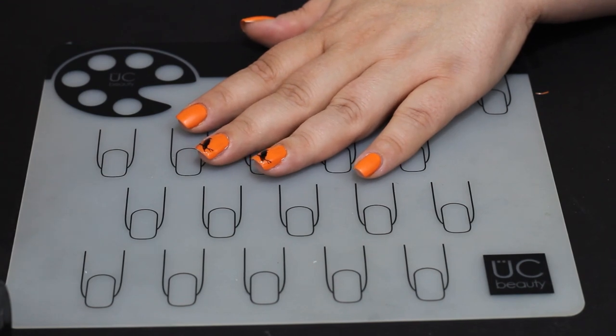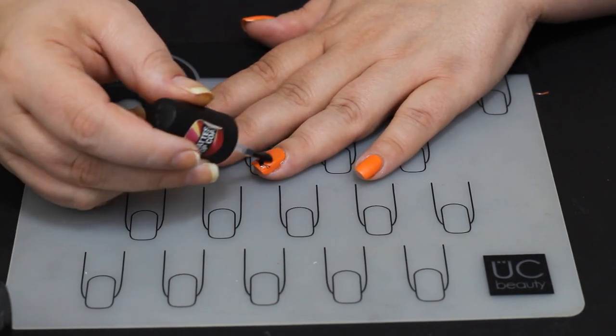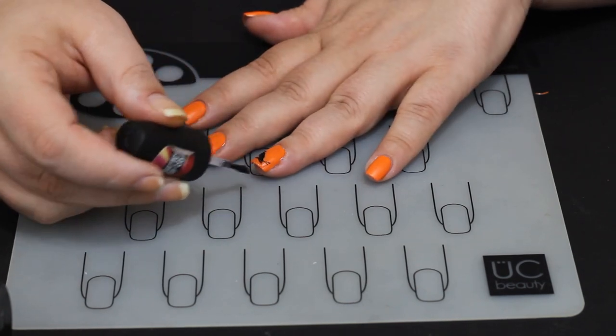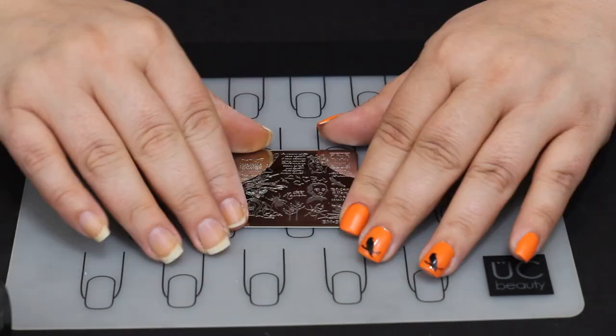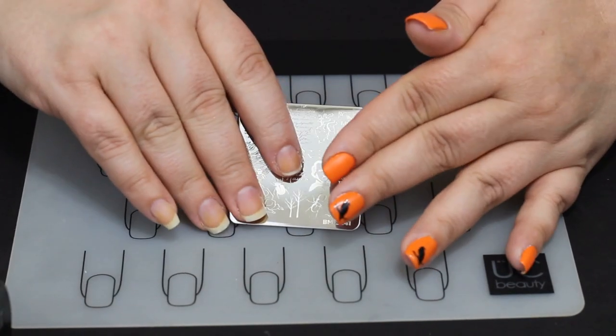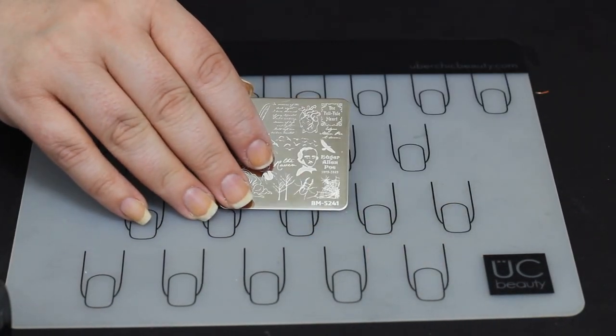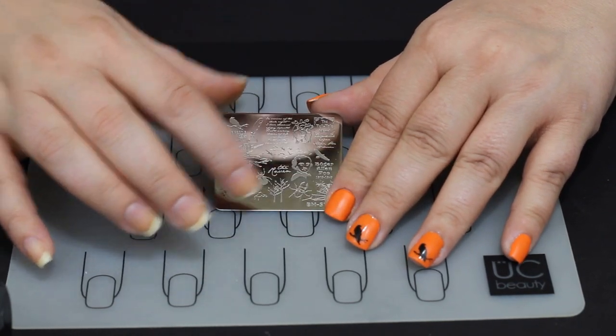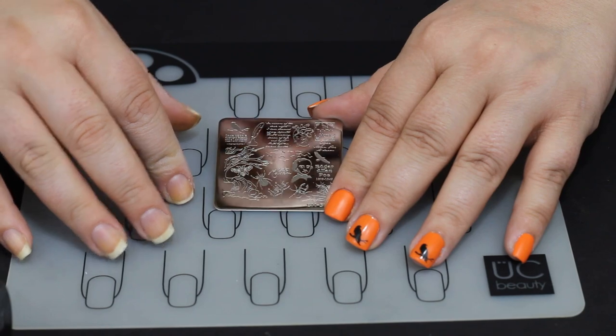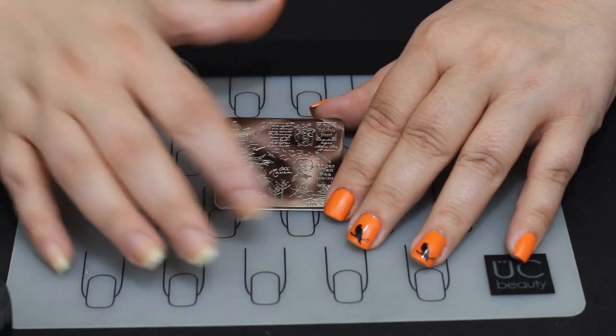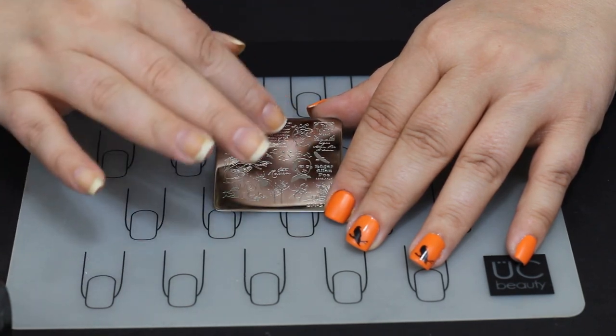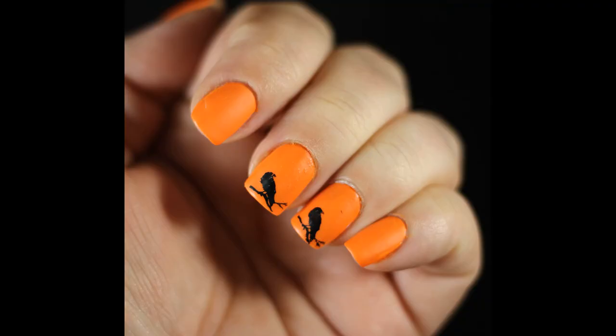Once you get the other two topcoats on, you can just kind of go back in a regular way with the Sinful Colors Matte Topcoat. That topcoat, by the way, love it. I was shocked at how good it is. I also wanted to talk to you about this plate again. We just use ravens on this because I want to do some simple stamping, but there were some great creepy trees on there, other birds that are flying off, it has Edgar Allan Poe quotes on it. It's really a nice plate if you want to do something kind of creepy.